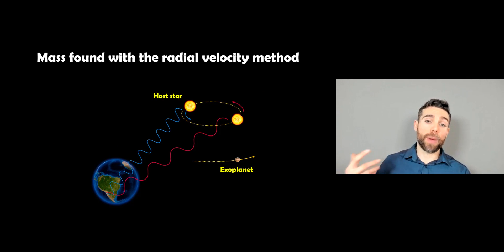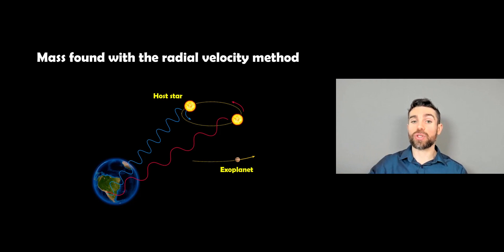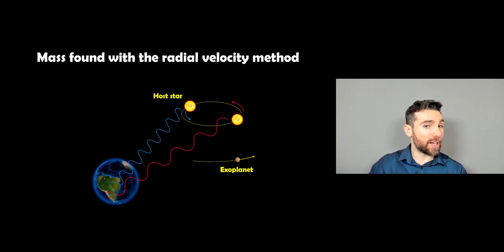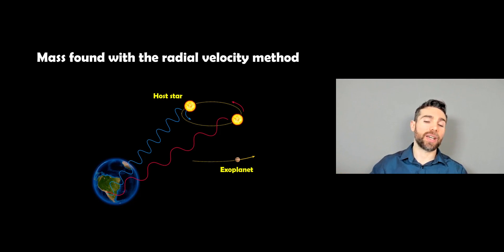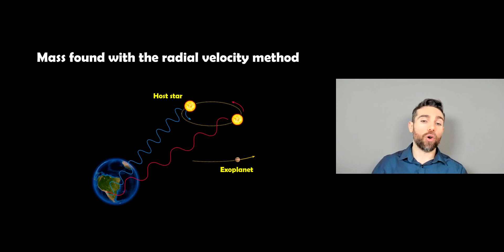Now we need to get the mass. To get the mass, we use the radial velocity method, where we look at a Doppler shift of the host star. We can't get measurements of the exoplanet directly, but we can measure the star. The star and the exoplanet orbit a common centre of mass. Don't think of it as the planet orbiting the star — they're both orbiting a common centre of mass, the barycentre.